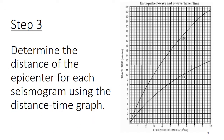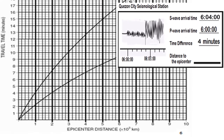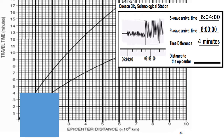Step 3: Determine the distance of the epicenter for each seismogram using the distance-time graph. In determining the distance of the epicenter from the seismological station — starting with Quezon City Seismological Station — we will be needing a piece of paper. When placing the paper on the distance-time graph, make sure that the topmost margin aligns with the horizontal lines.